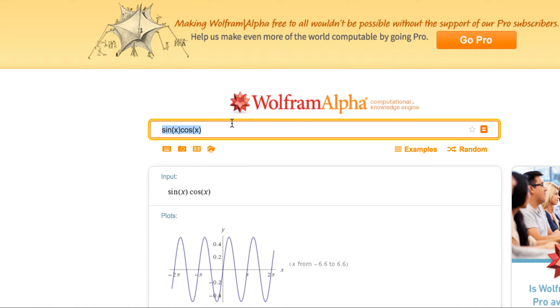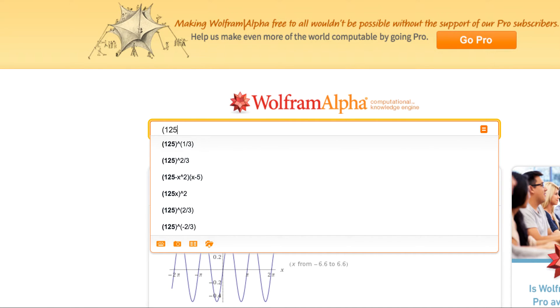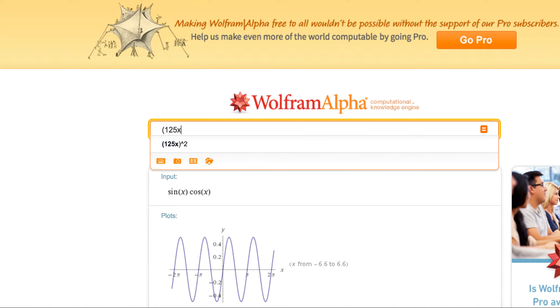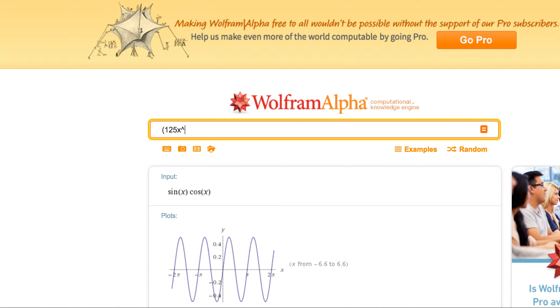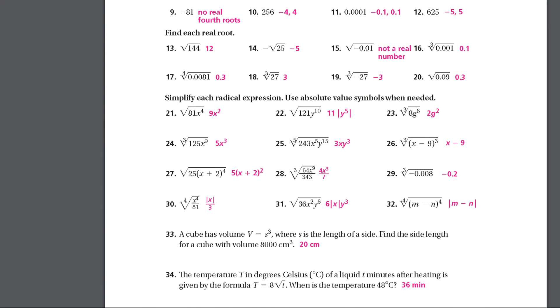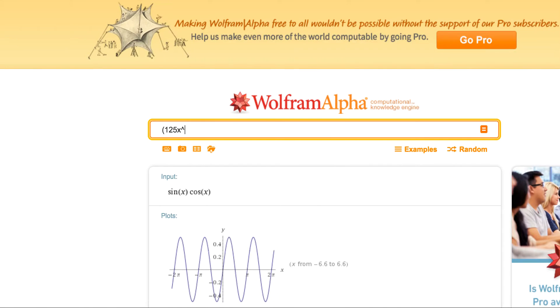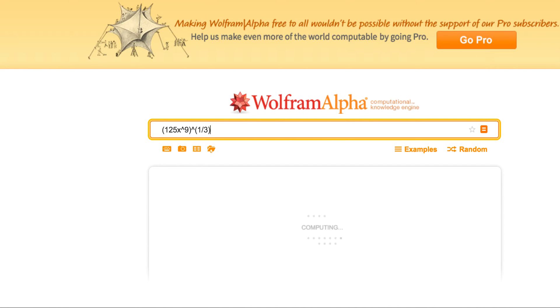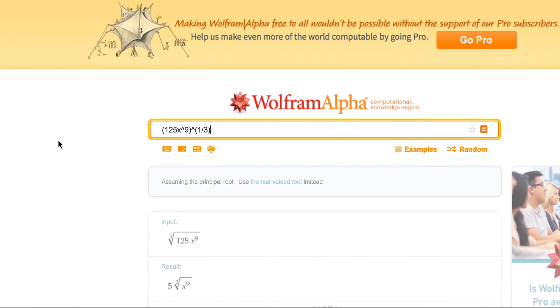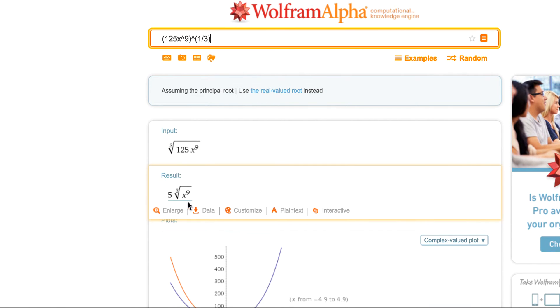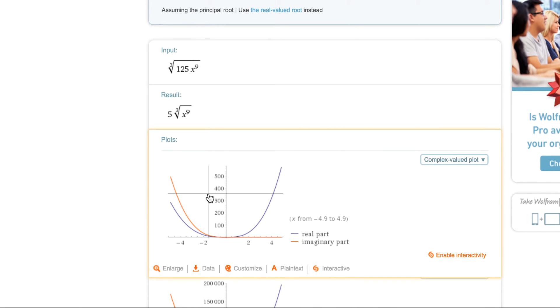I'm just going to write 125 x to the, was it x to the 3rd? I can't remember. There it is. So x to the 9th, x to the 9th, all of that to the 1/3 power. So there's the result.